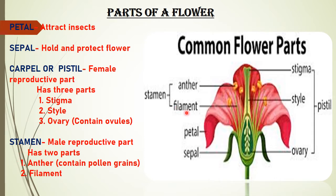The petal is usually the showy and most attractive part of a flower — it attracts insects. The sepal is a green leaf-like structure present at the base of a flower that holds the flower and covers and protects the bud of a flower in the early stage of development.